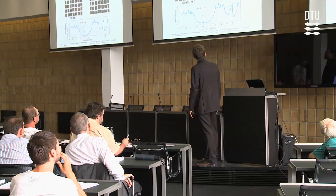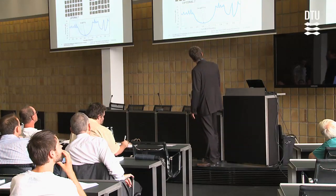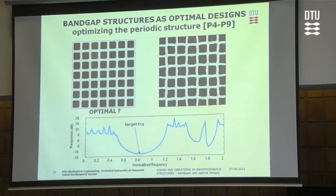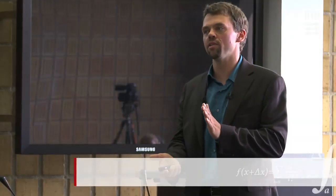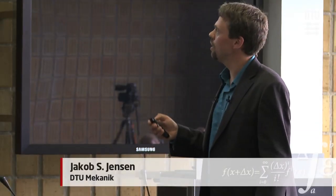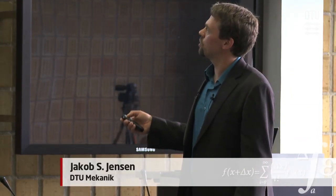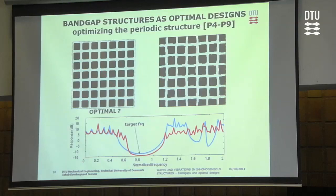The sample optimized structure obtained with the design method shows that we would get a periodic-like structure as the optimized design. However, the unit cells could not be uniform — due to the effect of the finite size of the specimen. The inclusions would also move to the boundaries of the structure to eliminate wave propagation along the boundaries. The optimized structure showed improvement compared to the purely periodic structure.